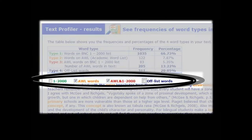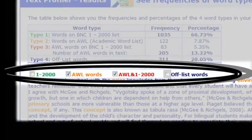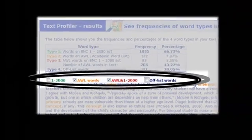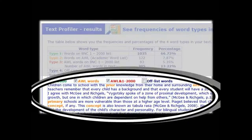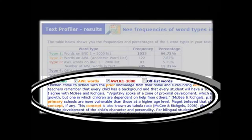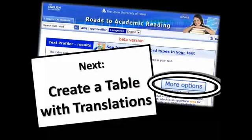The Profiler also lets you select which categories of words you want to highlight in your text. This helps you see which words in your text are the words you should understand and remember. Now go to video number two. It will show you how to use additional options to generate a table with translations.